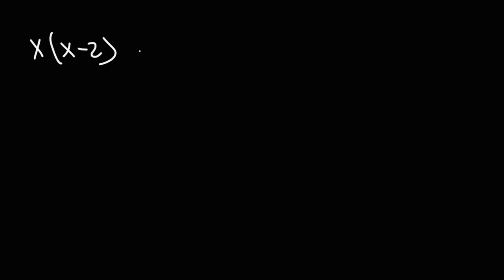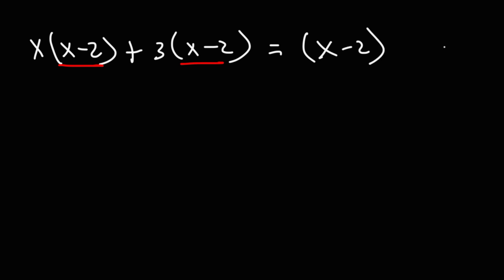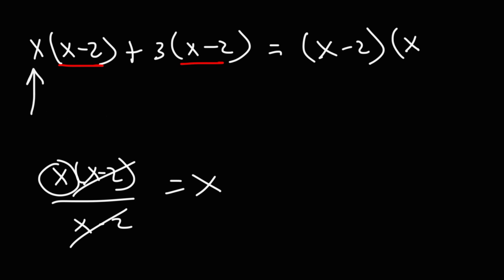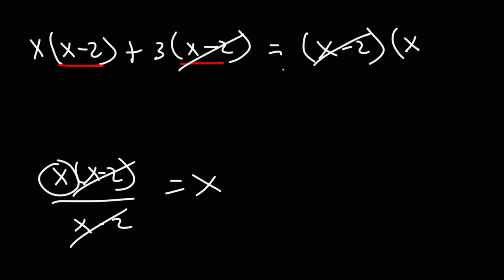What would you do if you saw an example like this: x times (x minus 2) plus 3 times (x minus 2)? Go ahead and factor out the GCF. The GCF is x minus 2. When we pull it out, we only write it once. If we take the first term and divide by (x minus 2), those cancel, giving us x. Dividing 3(x minus 2) by (x minus 2), those cancel, leaving positive 3. So the answer is (x minus 2)(x plus 3).